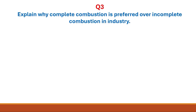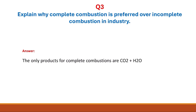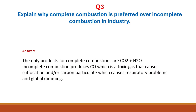Question 3: explain why complete combustion is preferred over incomplete combustion in industry. The answer is that the only products of complete combustion are carbon dioxide and water. However, incomplete combustion will produce carbon monoxide, which is a toxic gas and can cause suffocation. It might also produce carbon particulates, which cause respiratory problems and global dimming.